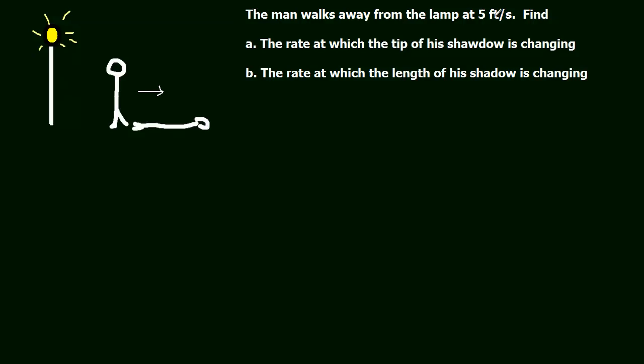The man walks away from the lamp at five feet per second, so he's moving in the direction of the arrow, and we're asked to find the rate at which the tip of his shadow is changing, and then the rate at which the length of his shadow is changing.